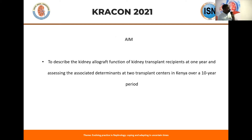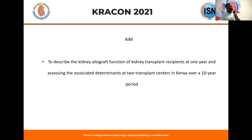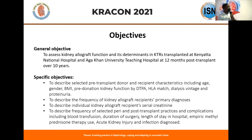We aimed at describing kidney allograft function of kidney transplant recipients at one year and assessing the associated determinants at two transplant centers within Kenya. The general objective was to assess the function and determinants of kidney transplant recipients.